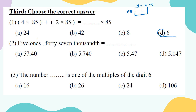Five ones plus forty-seven thousandths: five is in the ones place. For 47 thousandths, put the numerator as is, count three places — one, two, three — then put the decimal point, filling empty places with zeros: 0.047. Combined: 5.047. The right answer is D.